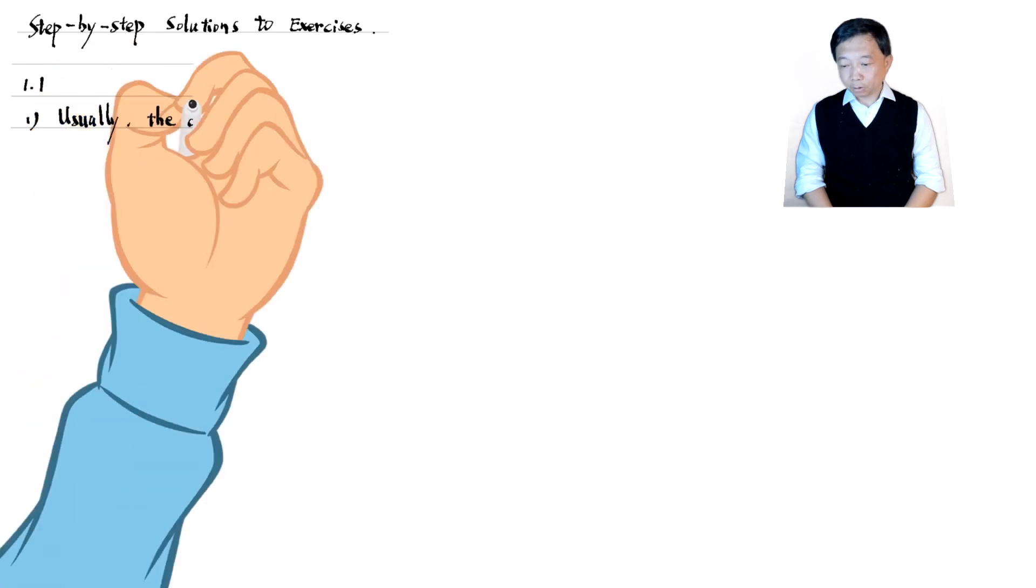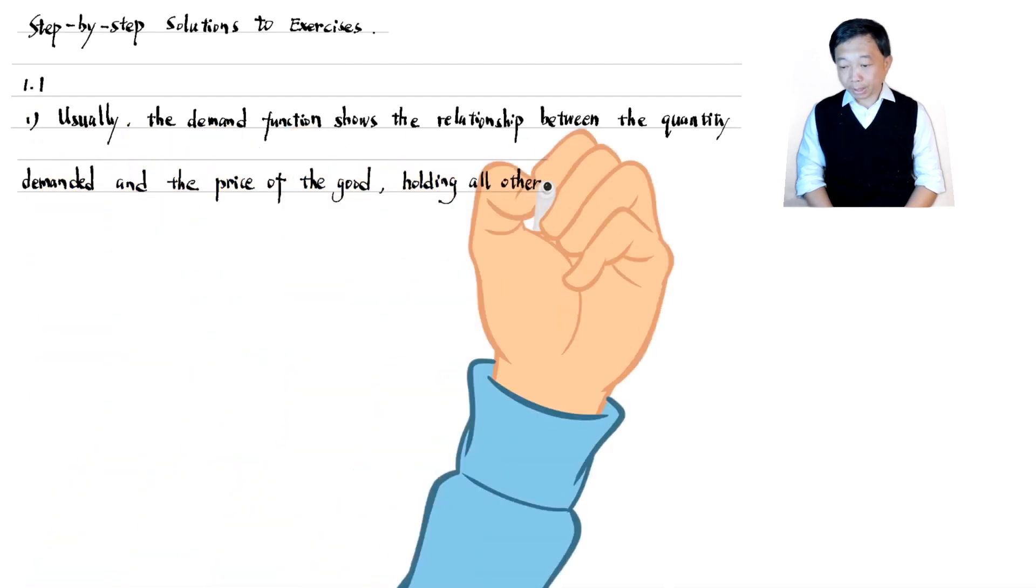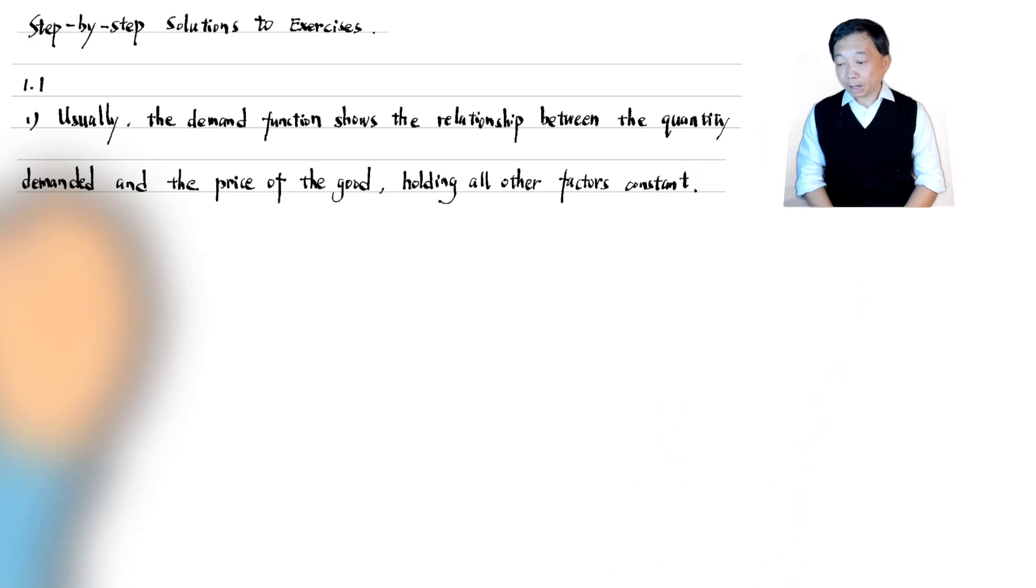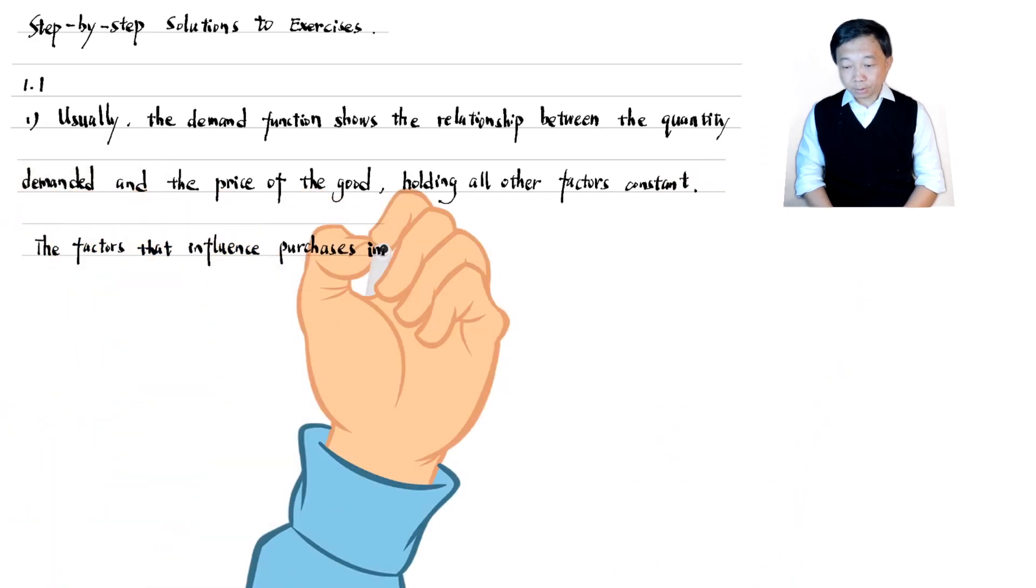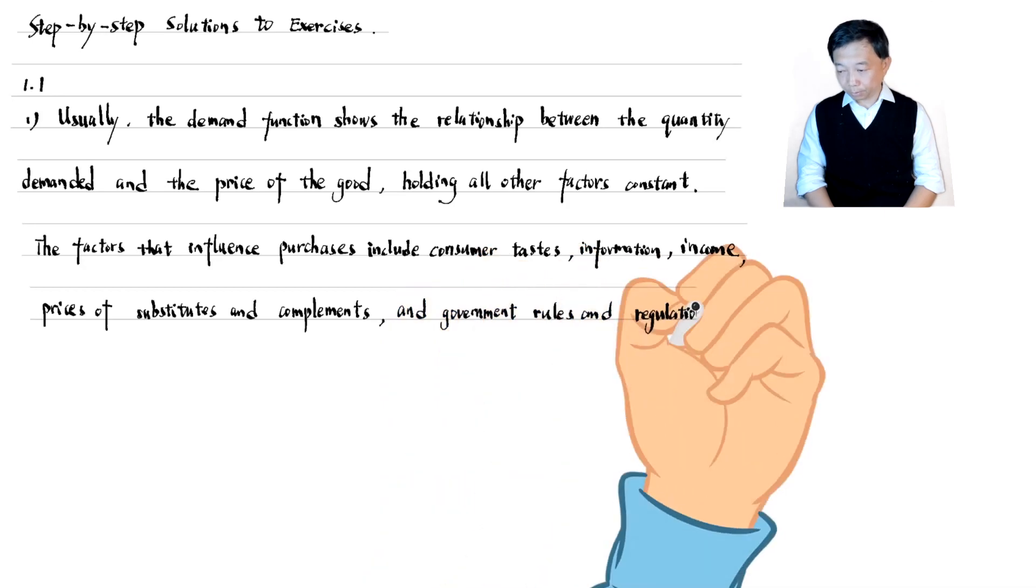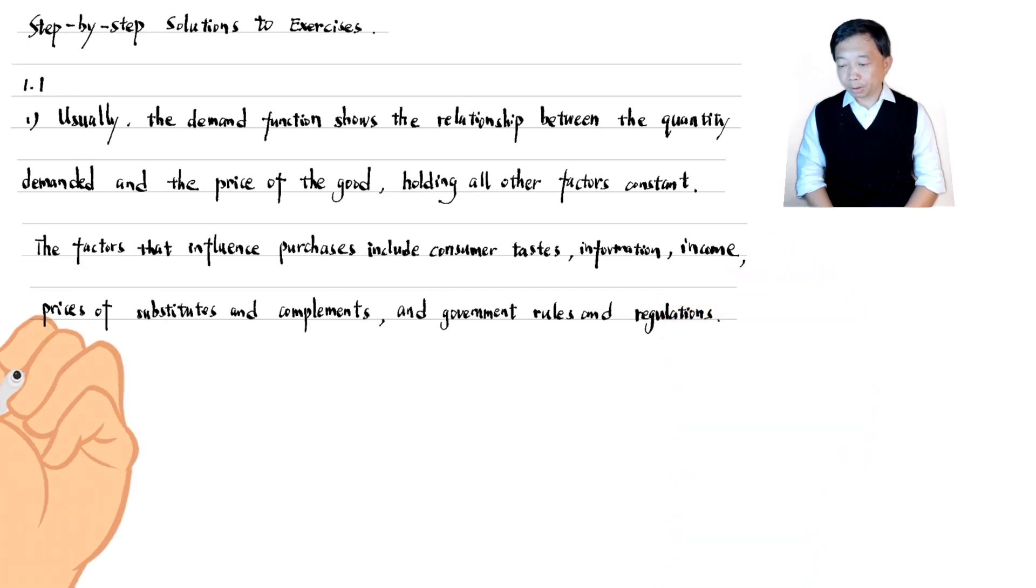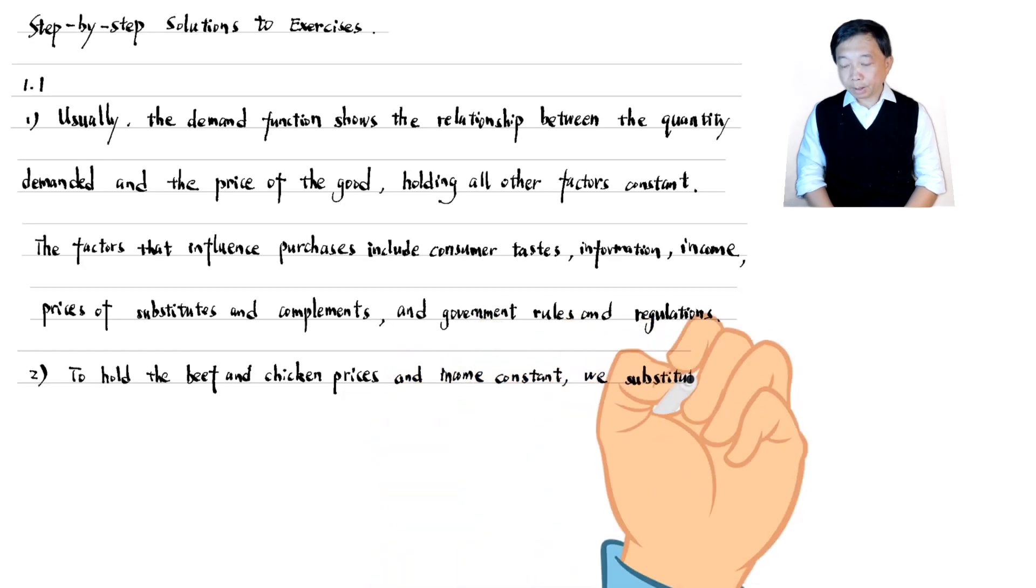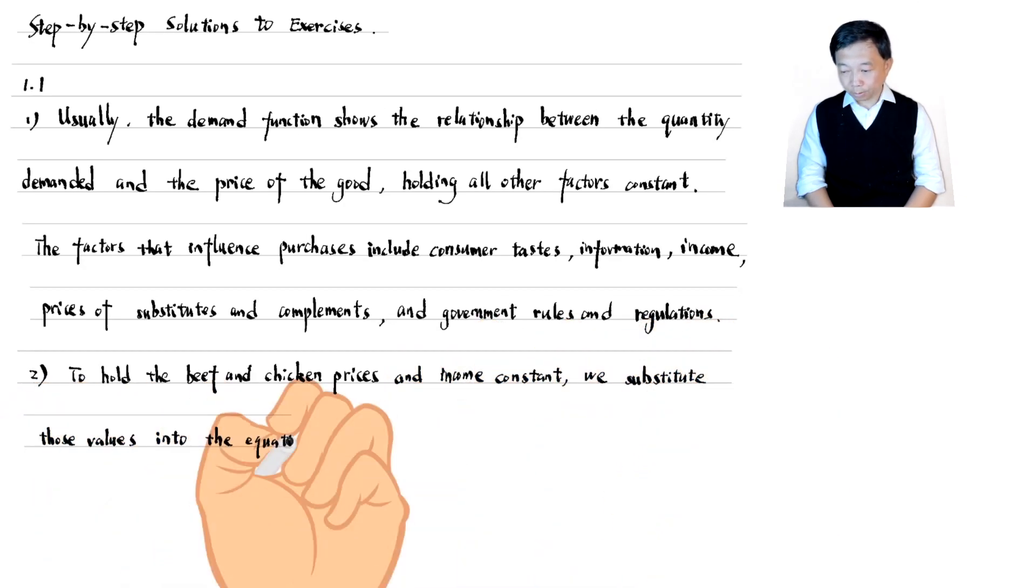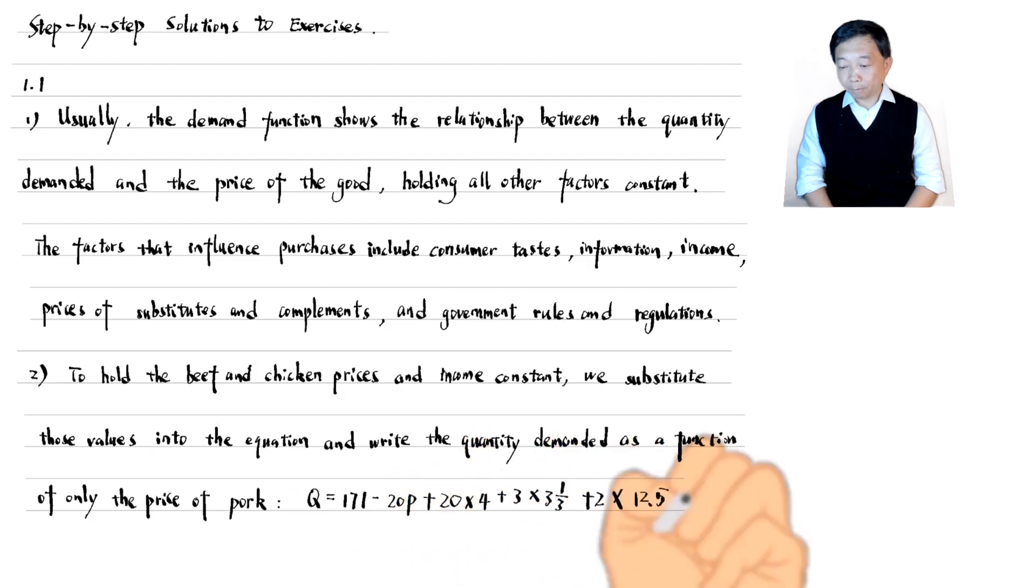First, the demand function shows the relationship between the quantity demanded and the price of the good, holding all other factors constant. The factors that influence purchases include consumer tastes, information, income, prices of substitutes and complements, and government rules and regulations. Second, to hold the beef and chicken prices and income constant, we substitute those values into the equation and write the quantity demanded as a function of only the price of pork. The demand function for pork is Q equals 286 minus 20 times p.